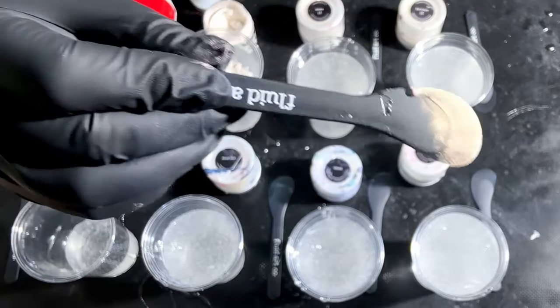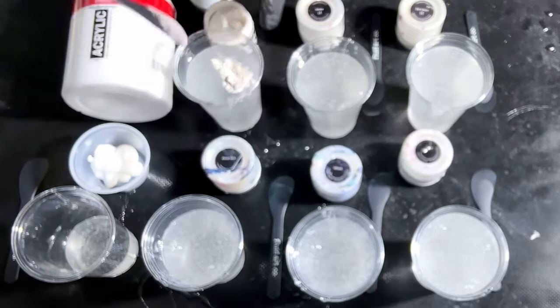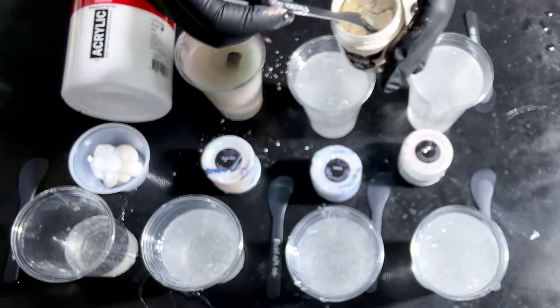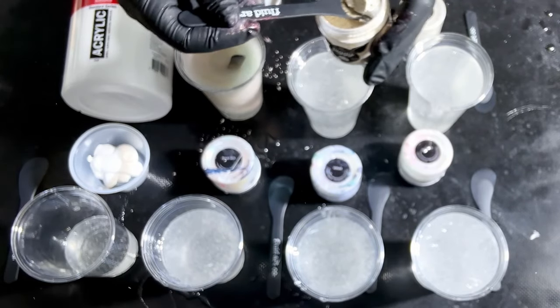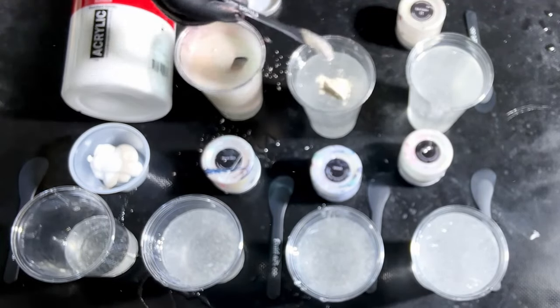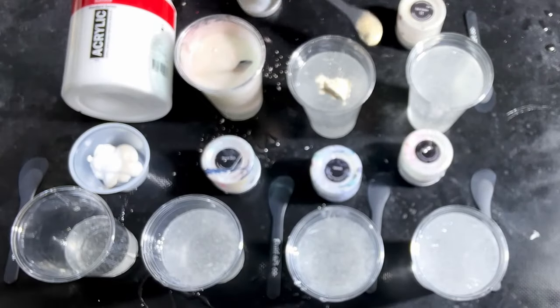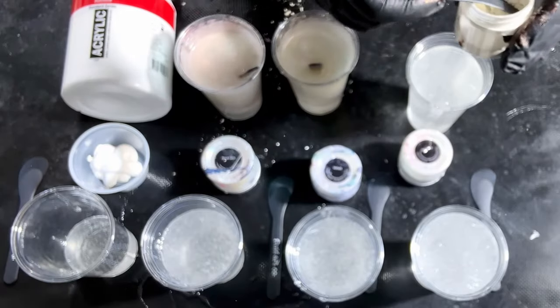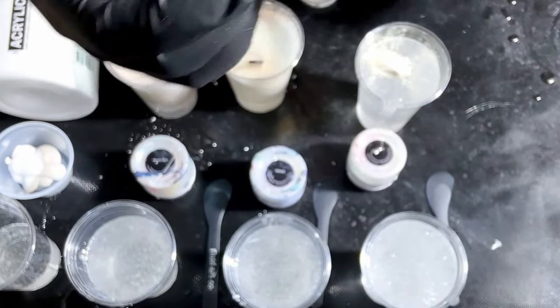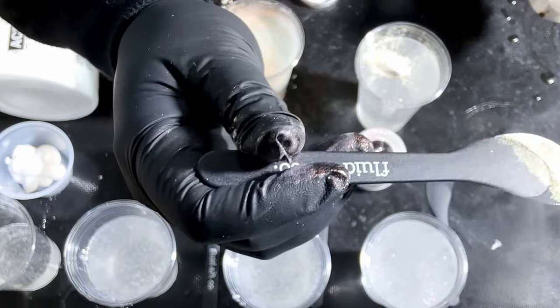The colors I'm using today are This Little Piggy Rose Quartz, which is our Interference Red. I have This Little Piggy Brulé, which is an amazing Interference Copper or Orange. These piggies, because they're Interference colors, will look whitish in the jar, but when you put them on top of black, you'll see the beautiful color come out.